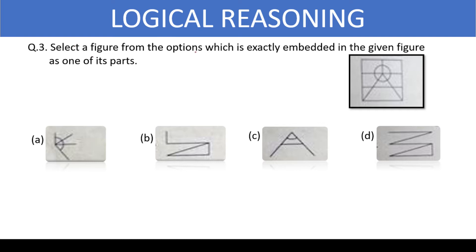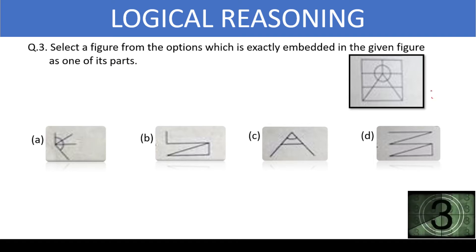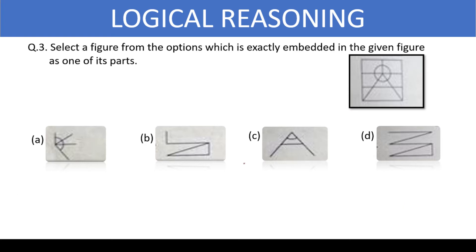Select a figure from the options which is exactly embedded in the given figure as one of its parts. This is a case of observation. Amongst the options, the only figure that matches or gets embedded is option C. As you can see, it makes an arc which completely fits in the given figure.